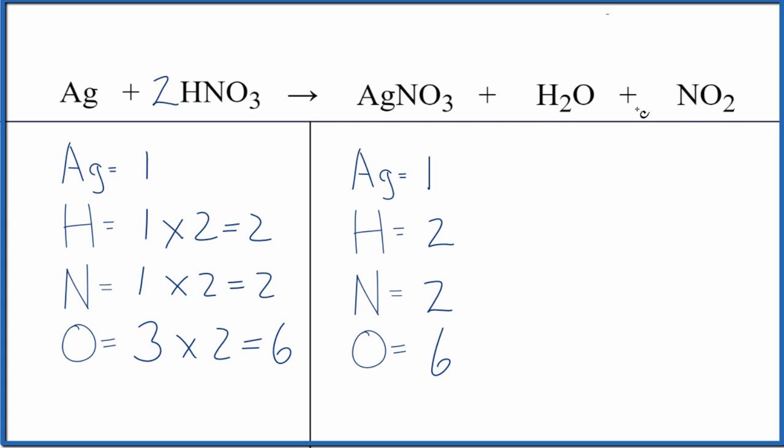If we write the states, they look like this. Silver is a solid. I'm guessing the nitric acid probably would be aqueous. The silver nitrate would be aqueous if you had some water.